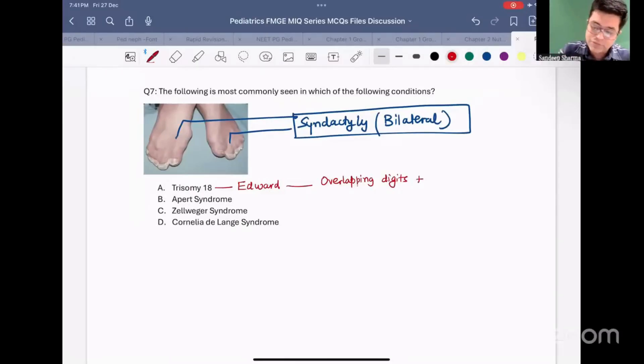Plus, they are also found to have an abnormality called as strawberry skull. We are not talking about strawberry tongue, that is in Kawasaki, strawberry shape of the skull. If they say overlapping digits and strawberry skull, along with rocker bottom feet, these are the key words to identify a patient of trisomy 18. So, trisomy 18 is not associated with syndactyly.